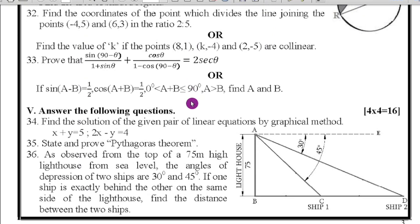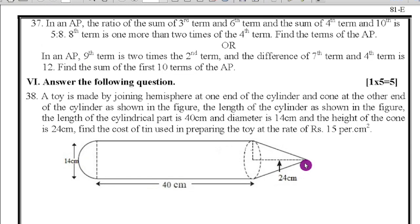Next, trigonometry question is given, this question is very easy. Direct formula, use it, the option given practice it. Next, fifth main: answer the following question, four marks questions. Question number 34: find the solution of the given pair of linear equations by graphical method. Use graphical method, find out. State and prove Pythagoras theorem. Next 36th question, this question's answer I have given, practice it neatly. Next question number 37, progression question is given, this question is also easy, practice it.